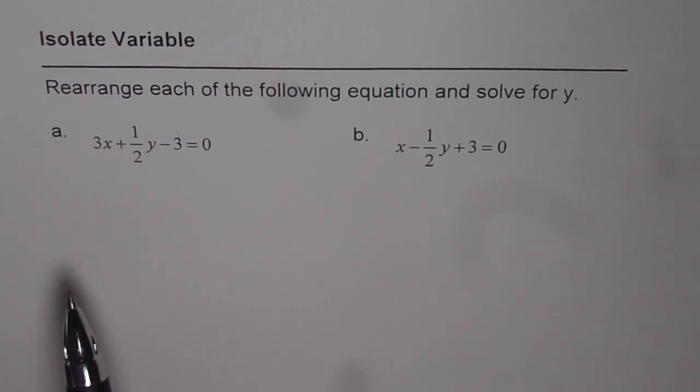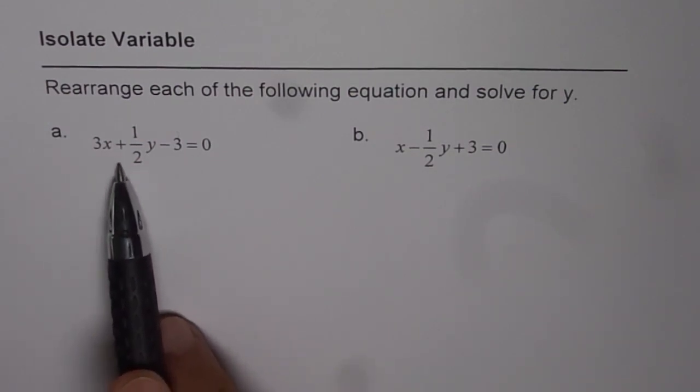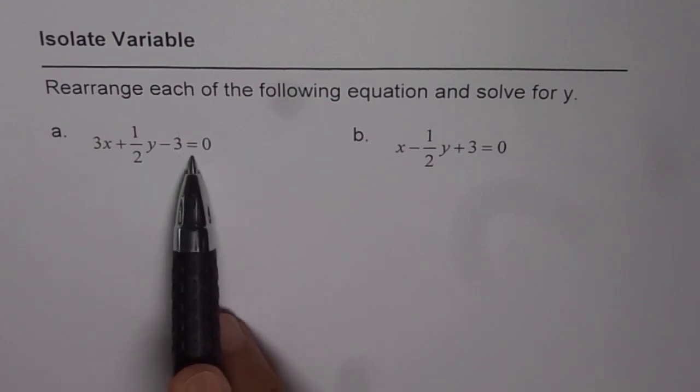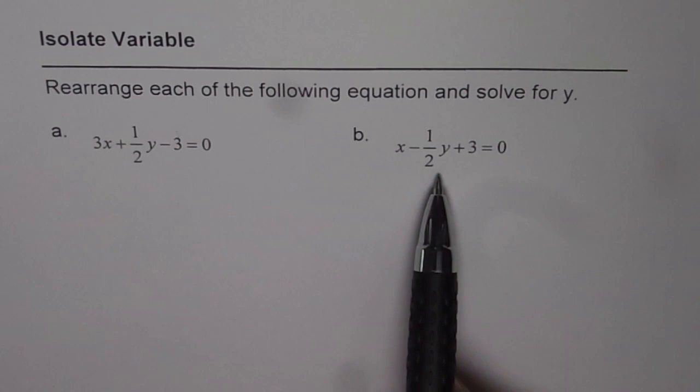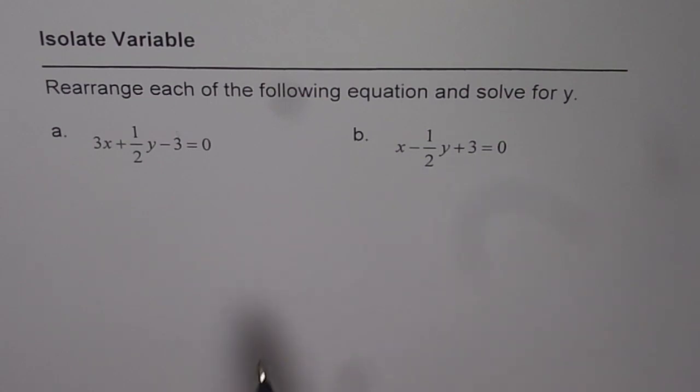Let me solve one of them for you. Here we have 3x plus half of y minus 3 equals to 0. The other one is x minus half of y plus 3 equals to 0. You can pause the video, solve these questions and then look into my suggestion.